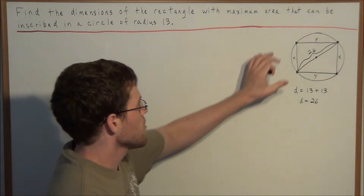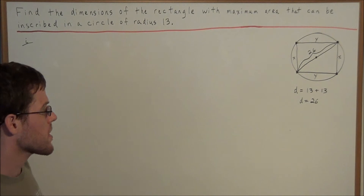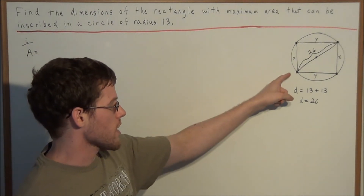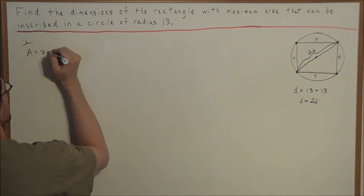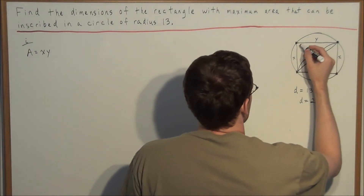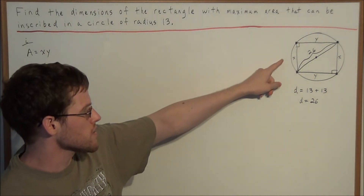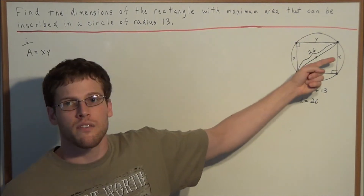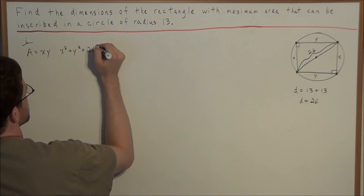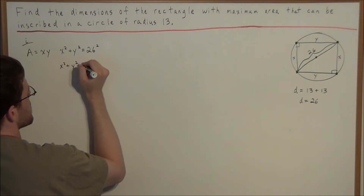Now we're trying to maximize the area of this rectangle. Our first step is to set up two equations and make a substitution. The area of a rectangle is length times width, so area equals x times y. Using the Pythagorean theorem — notice we have two right triangles building this rectangle — the first leg squared plus the second leg squared equals the hypotenuse squared. This gives us x squared plus y squared equals 26 squared, which simplifies to x squared plus y squared equals 676.